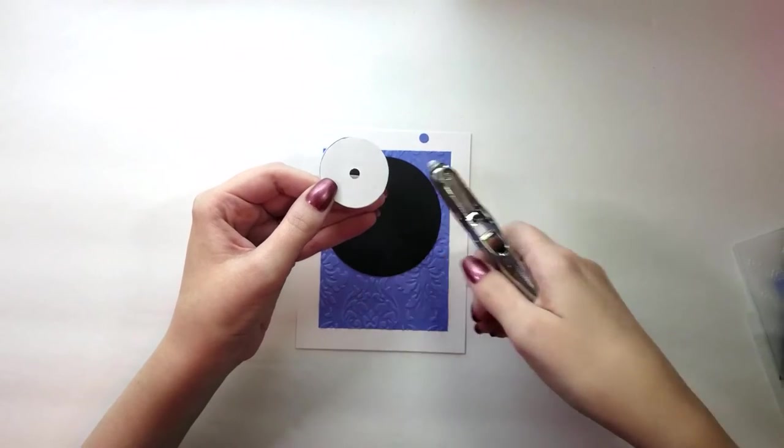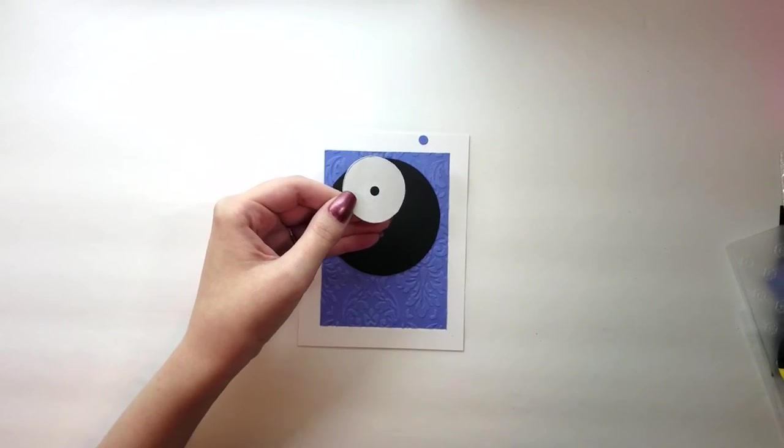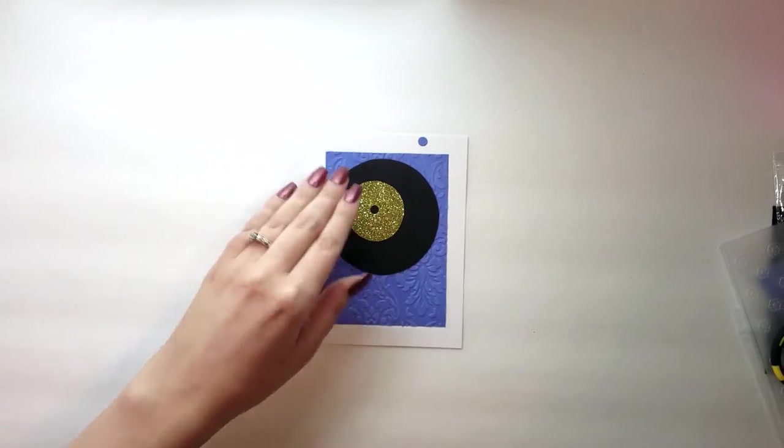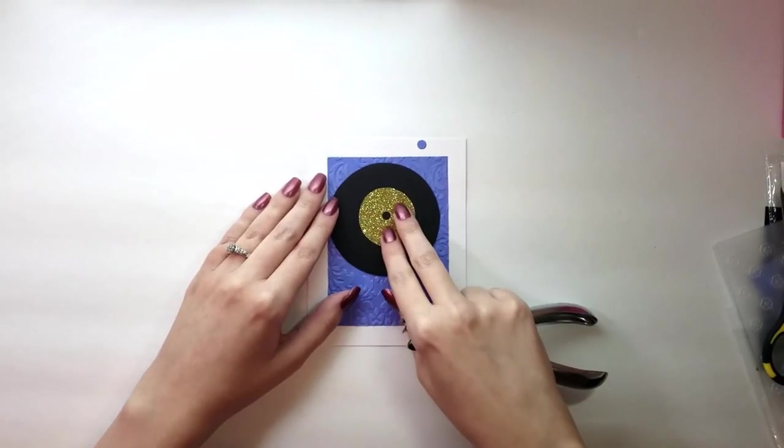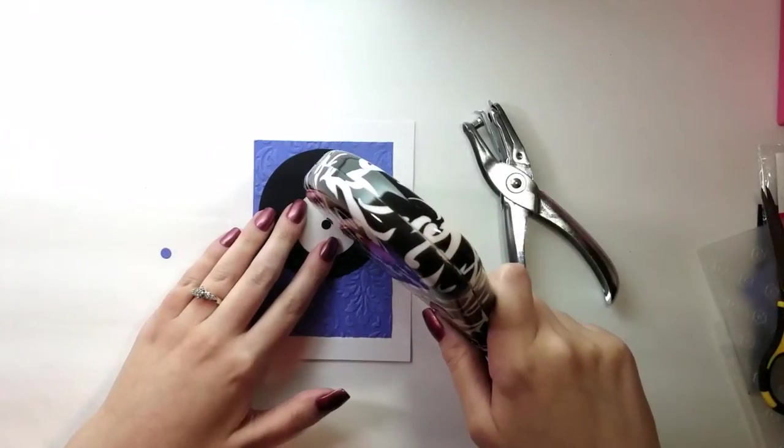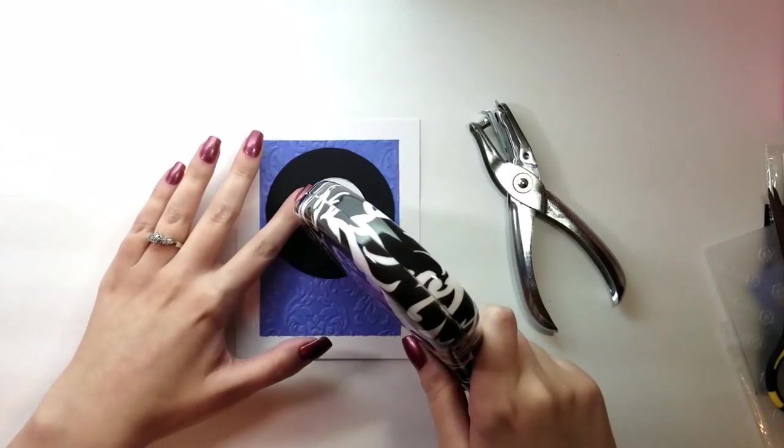You can use any color or design for your centerpiece, but I just thought the gold looked really nice. So I'm going to add a little bit of glue from my ATG gun and center that in place.